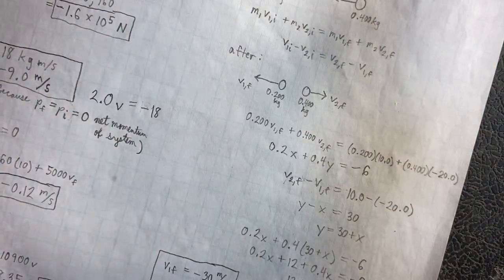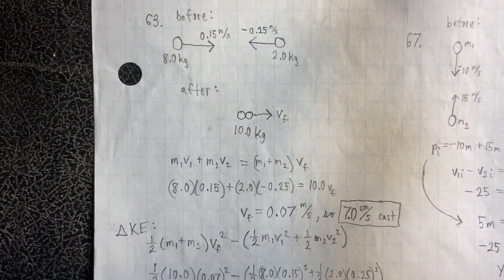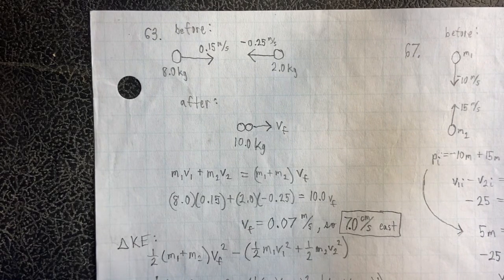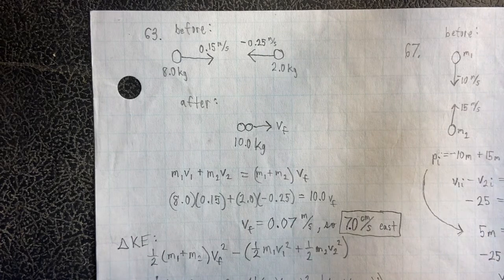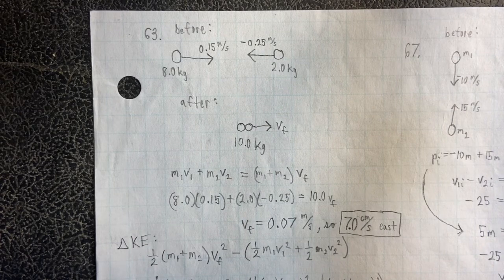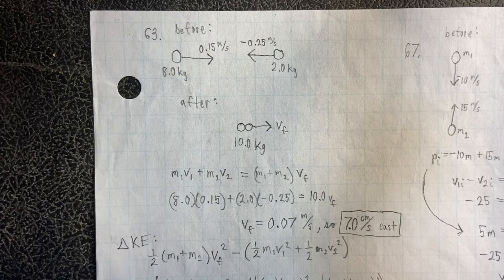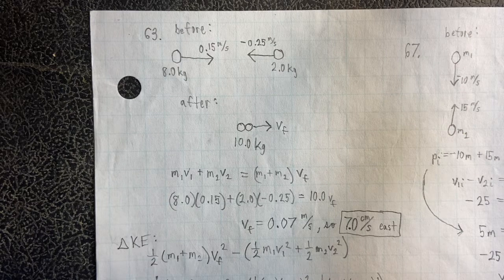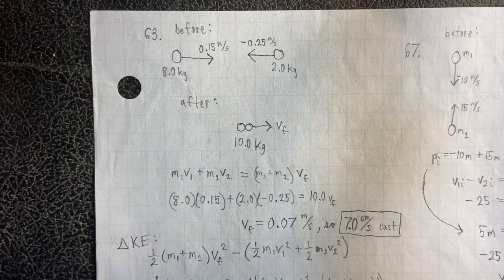All right, let's go on to number 63. So, for 63, our setup, or our before sketch, has the two objects going towards each other, right?